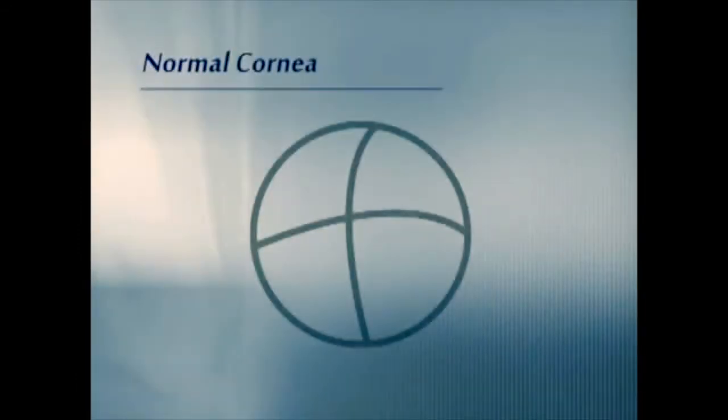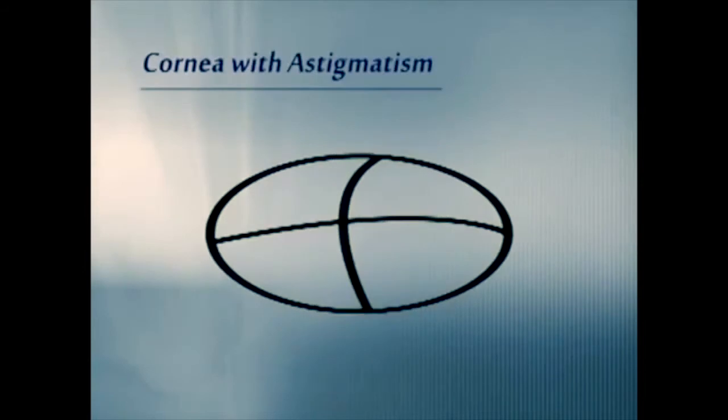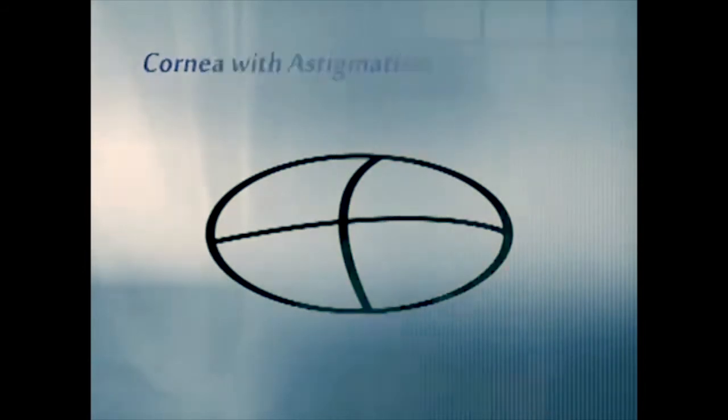Astigmatism is another common vision problem that's corrected with glasses and contact lenses. In astigmatism, the cornea is unevenly shaped, with one side steeper than the other, so it's shaped actually a little more like a football than a basketball. And as a result, the image is blurry when it reaches the retina.